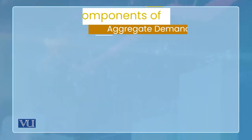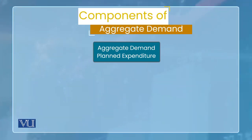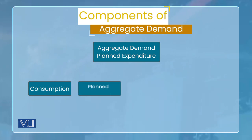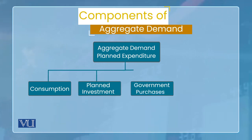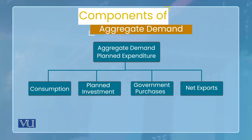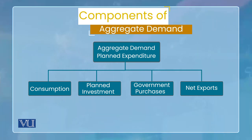अब aggregate demand के चार components होते हैं — and what are those four components? First is consumption, second is planned investment, third is government purchases, and fourth is net exports. तो ये चारों को मिलाएं तो मिल के aggregate demand बन जाएगी। अब इनमें से one by one हम हर एक को discuss करेंगे ताकि हम अपना macro model develop कर सकें।